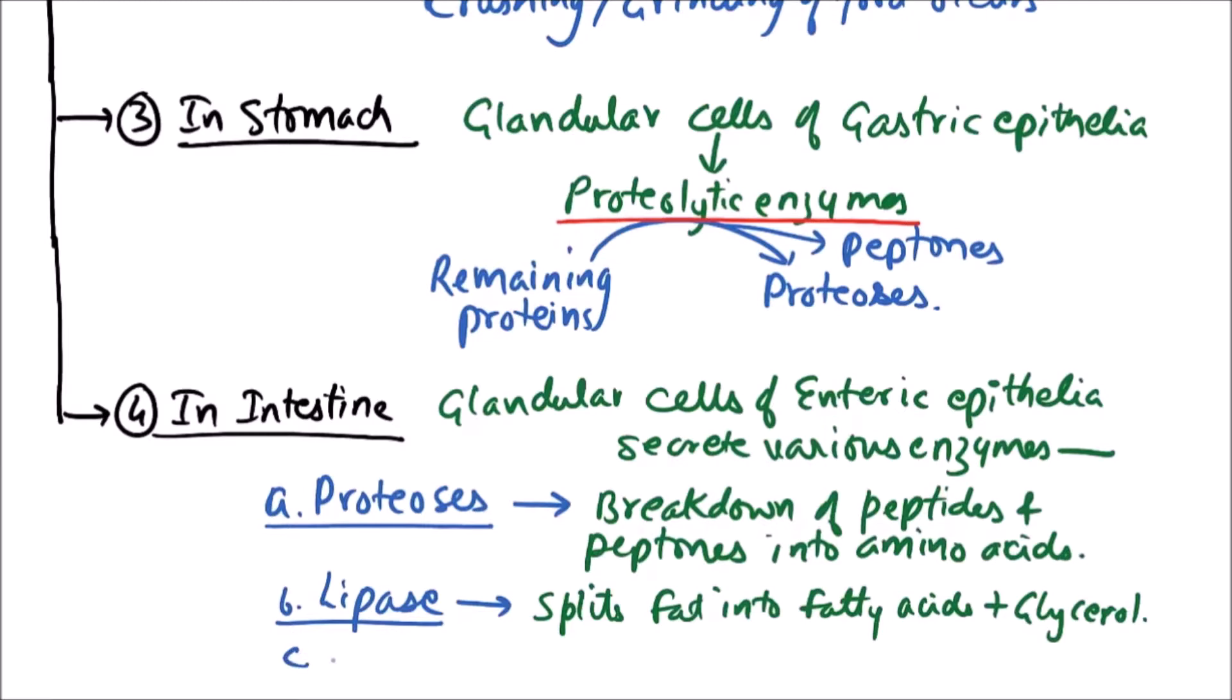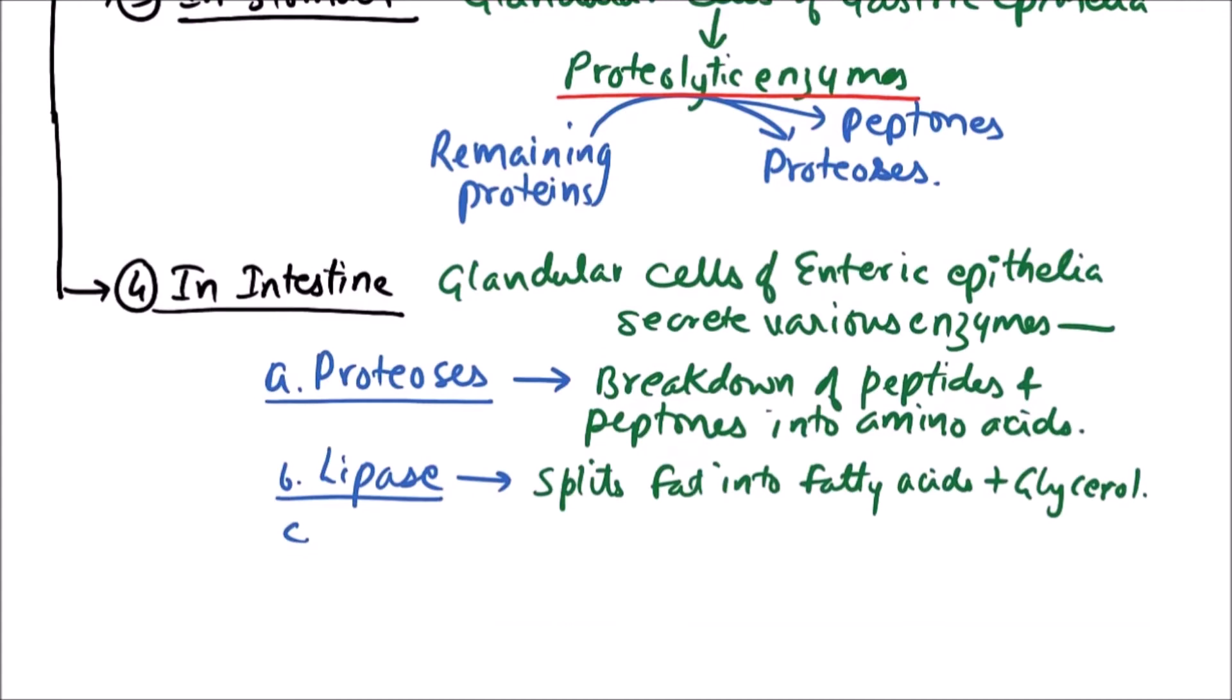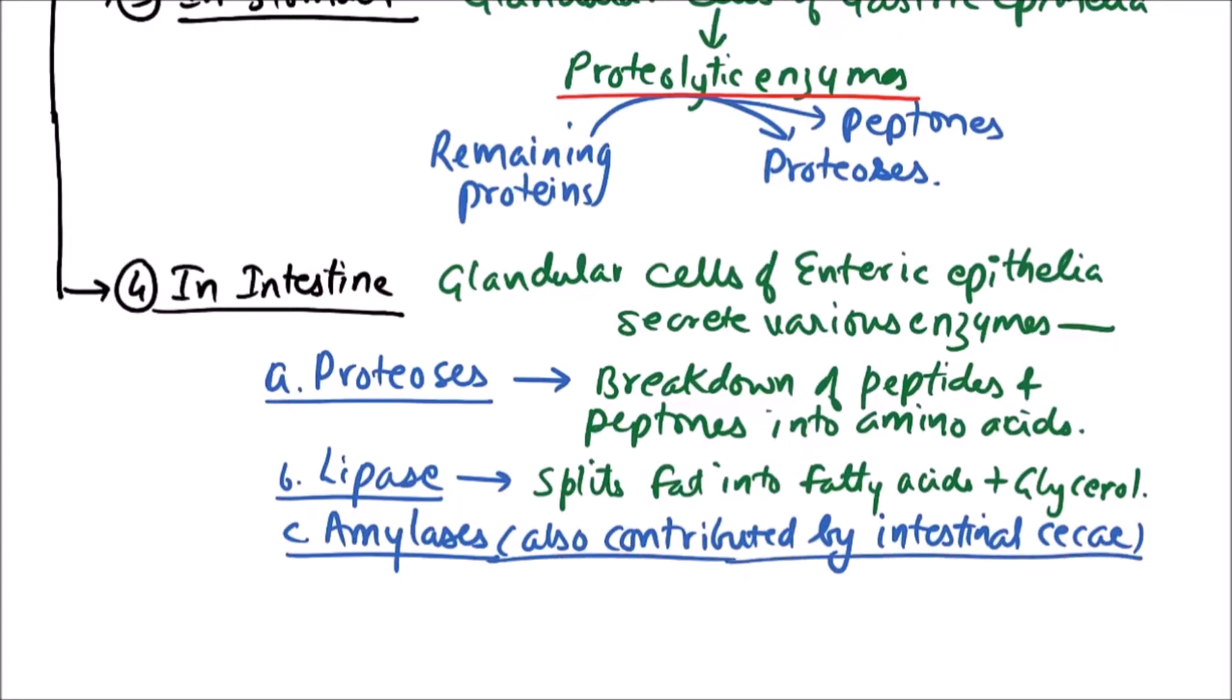Third one is amylases. It is important to note that some amylases are also contributed by intestinal ceca. Now these amylases digest the starch and glycogen into simple sugars.